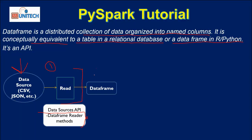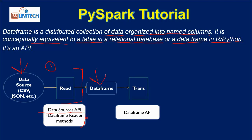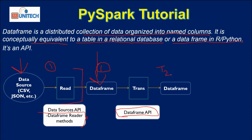Once we read the data, we store it in a DataFrame. So the DataFrame comes into the picture after reading the data. We can also create another DataFrame by transforming the source DataFrame. For example, we have DataFrame 1 — think of it as Table 1. After applying some transformation using the DataFrame API, we create another table, which is Table 2, or DataFrame 2.